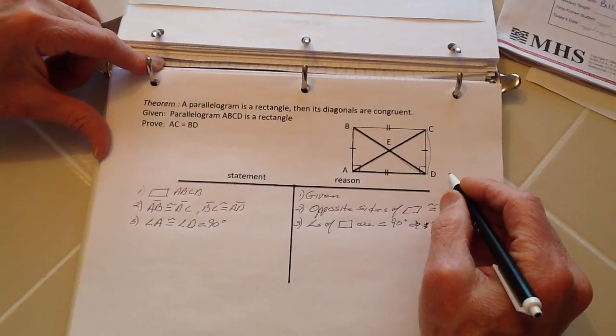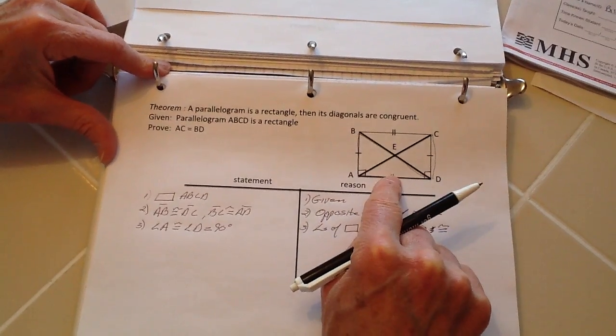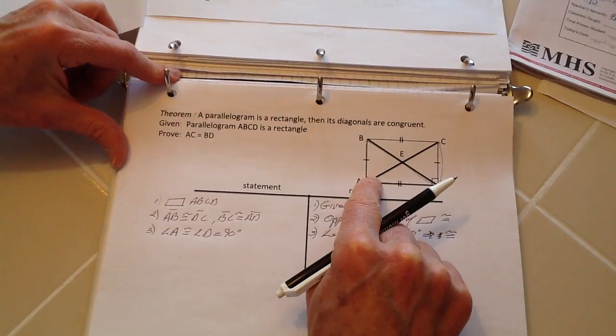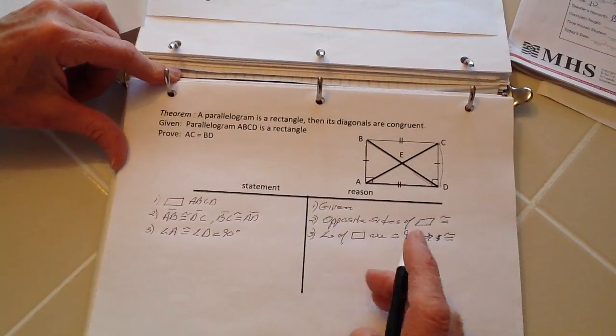So with this strategy right here, I know that if I can make these triangles congruent, then I know that these right here will be corresponding parts, and therefore they will be congruent, and then I will have solved my problem.